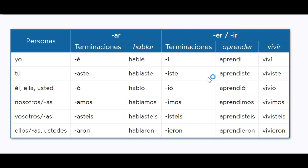Perfect. And then you do exactly the same thing for ER or IR — they have the same endings over here. So take the ER from aprender, so we have aprend. And then for nosotros, we could do aprendimos. Nosotros, which would be the subject pronoun meaning 'we,' and then we get aprendimos.